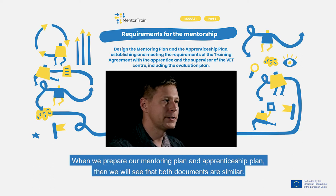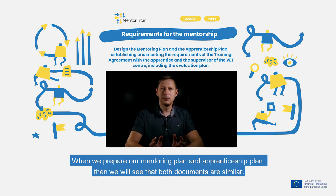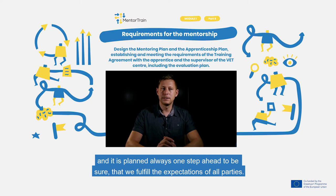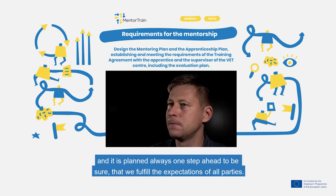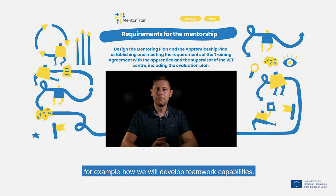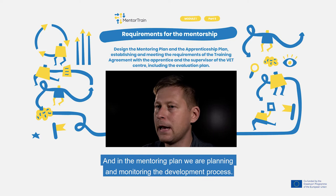When we prepare our mentoring plan and apprenticeship plan, we will see that both documents are similar. The main difference is that the mentoring plan looks at the apprenticeship from the side of the company and is planned always one step ahead, to be sure that we fulfill the expectations of all parties. In the mentoring plan we clearly write down the learning outcomes in connection with different tasks — for example, how we will develop teamwork capabilities — and we are planning and monitoring the development process.